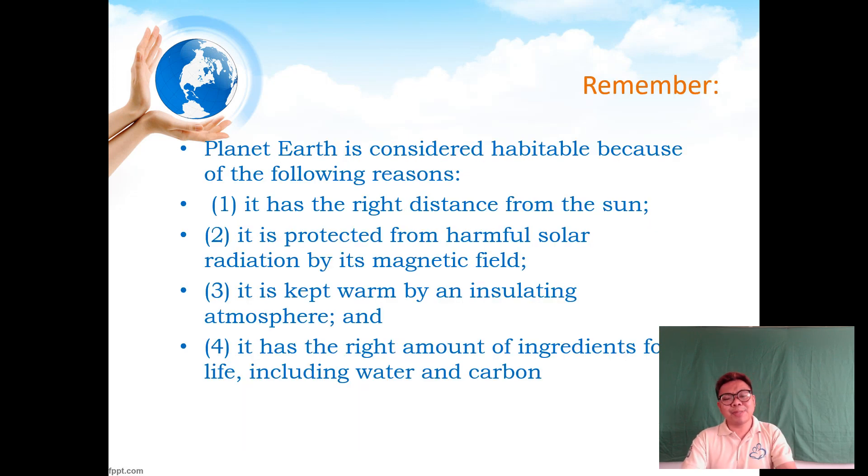Again, remember: planet Earth is considered habitable because of the following reasons. Number one, it has the right distance from the sun. Number two, it is protected from harmful solar radiation by its magnetic field. Number three, it is kept warm by an insulating atmosphere. And number four, it has the right amount of ingredients for life, including water and carbon.